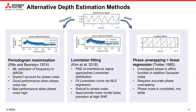Here are some algorithms that can be applied to FMCW LiDAR depth estimation. Starting from the left, we have periodogram maximization proposed by Reif and Boerstein. It is the conventional approach to frequency estimation that assumes additive noise instead of phase noise. Thus, the maximum likelihood frequency is the position of the peak in a periodogram. However, phase noise broadens the spectral density, so this approach incurs more error in our application.